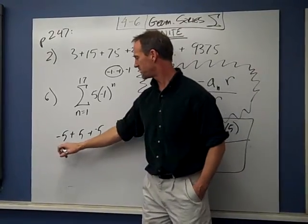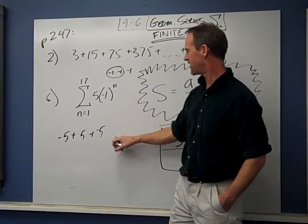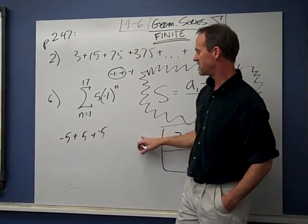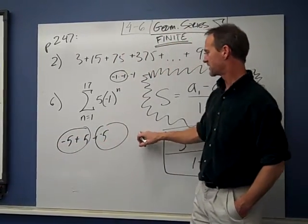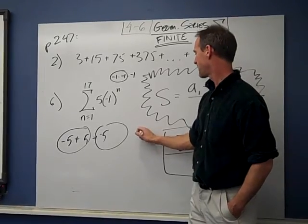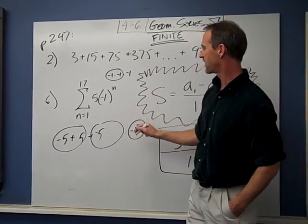Well you'll see this is just going to alternate negative, positive, negative, positive, negative, positive, and you can see that with pairs adding up to zeros, our last pair is going to be a negative 5, and that should be the sum.